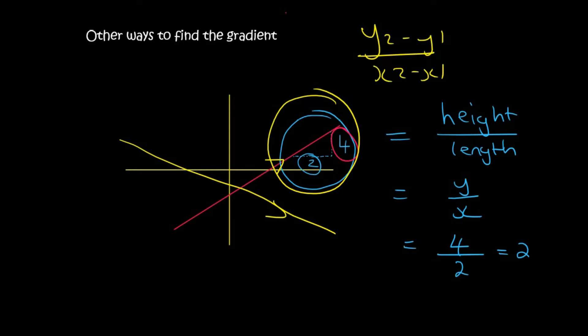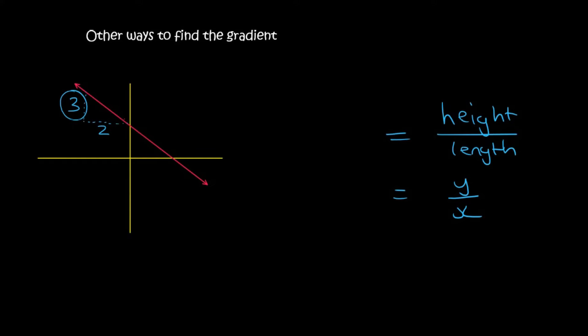So let's practice that a bit. With this one over here, we can see that the height part is 3 and the length part is 2. However, this is a negative gradient, but this method won't tell you that. So all that you do is you add a negative in the front.